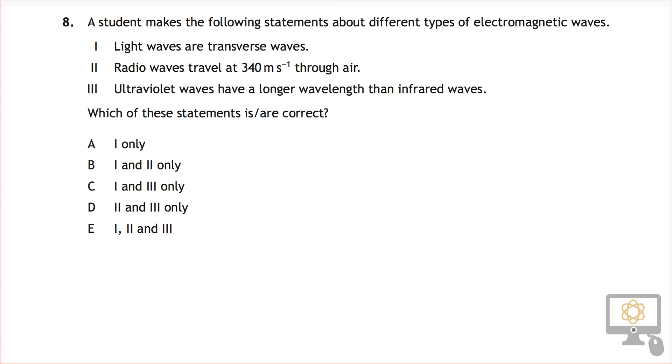Let's look at question number 8 from the 2015 National 5 Physics paper. A student makes the following statements about different types of electromagnetic waves. First of all, light waves are transverse waves. The question is, which of these statements are correct?